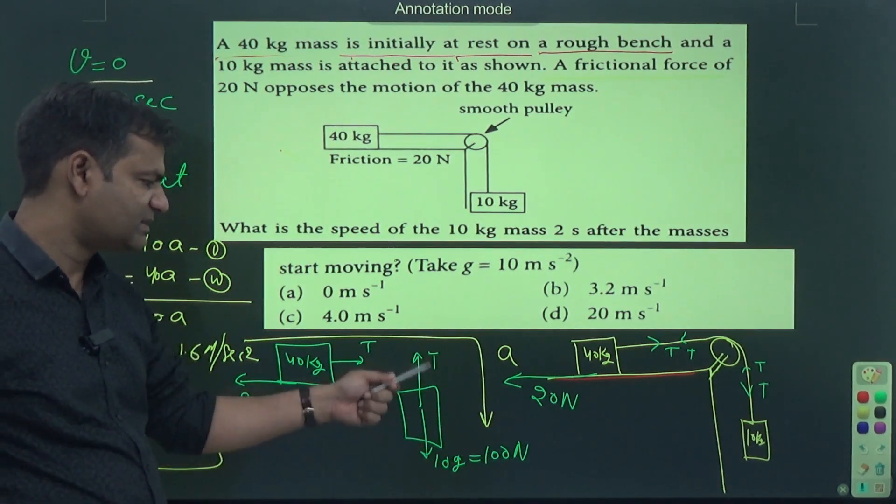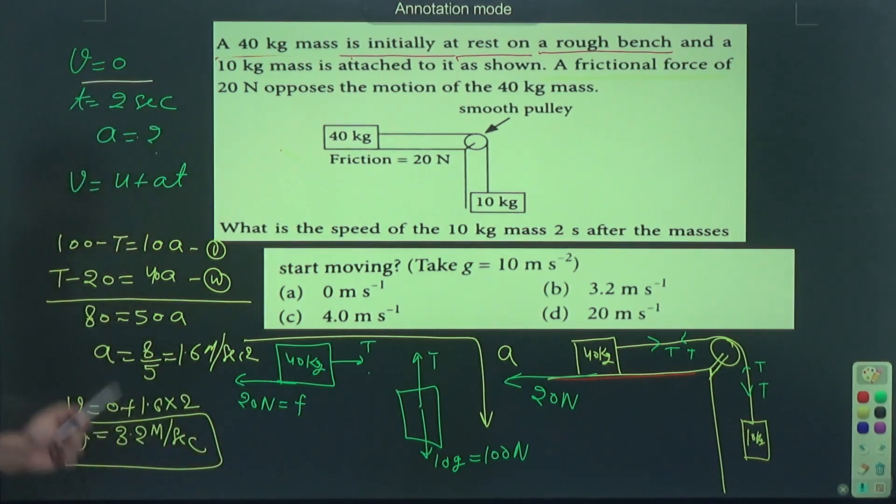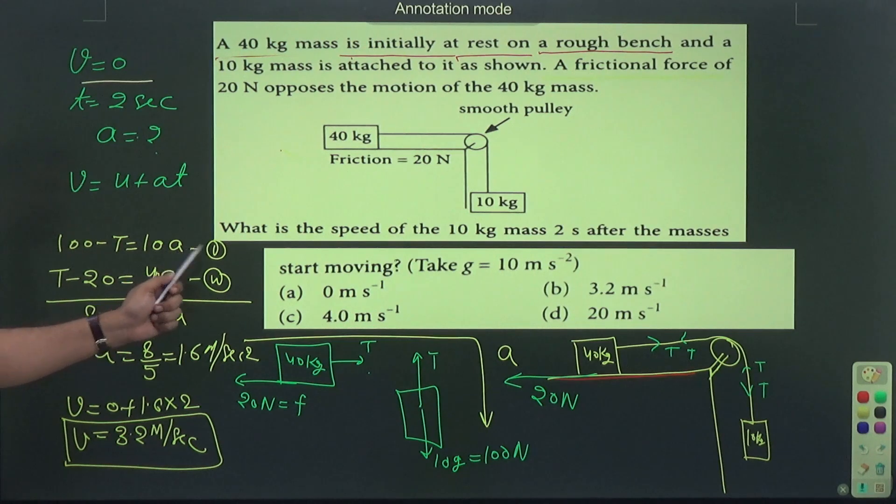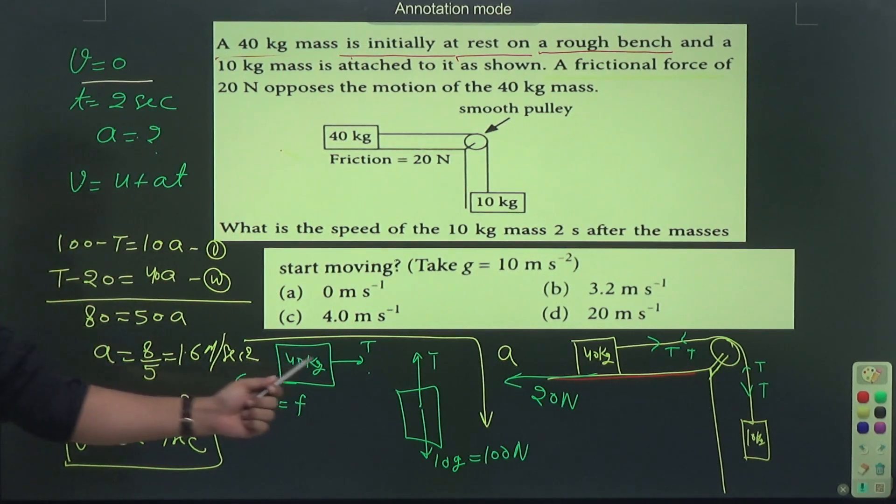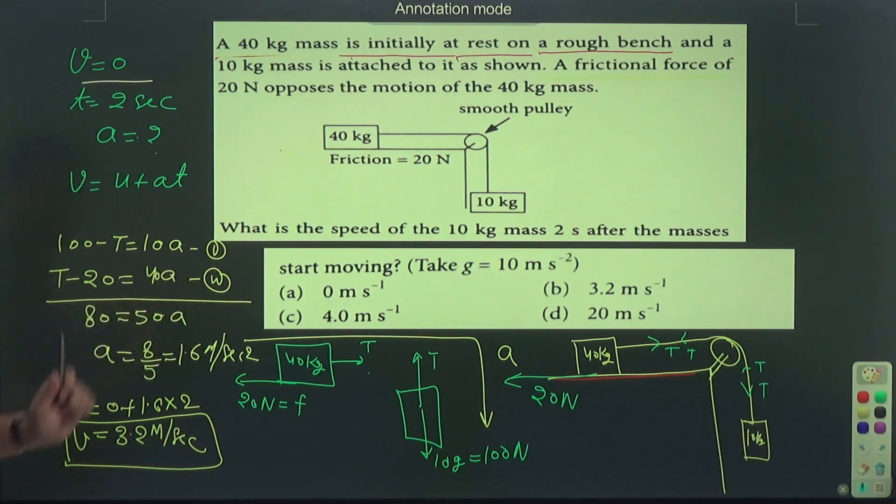I know that 100 - T = m × a, where m is 10, so 10 × a, equation number 1. Next, T - 20 = 40a, equation number 2. If both are added, then a = 1.6 meters per second squared. If this value is put here, v = u + at, where u = 0, a = 1.6, and t is 2.